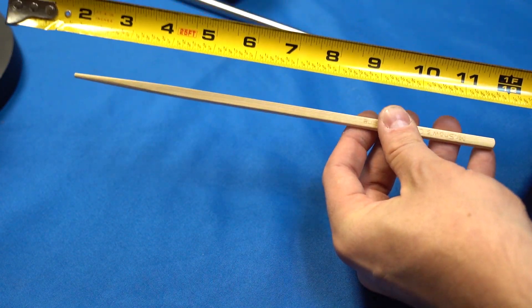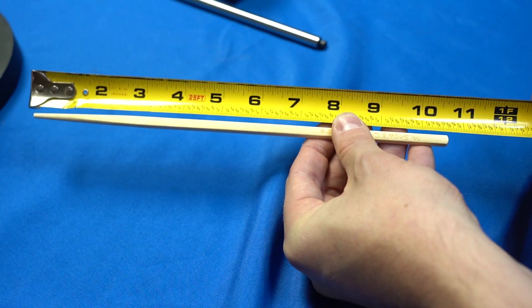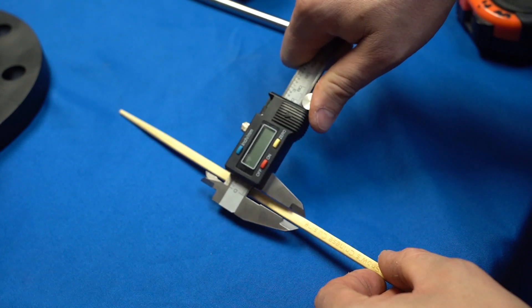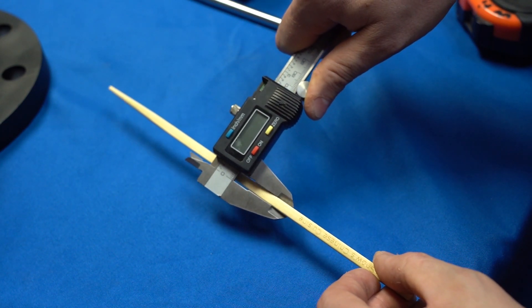First, we'll want to measure our object. This is a chopstick. We're going to make a jig for our chopstick and it's roughly 10.5 inches. For smaller measurements, I like to use the calipers. Make sure that they're on. They work the best that way.